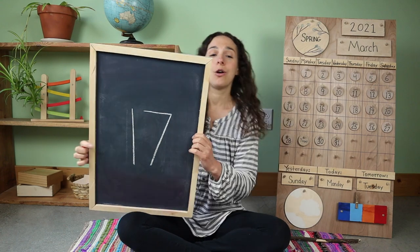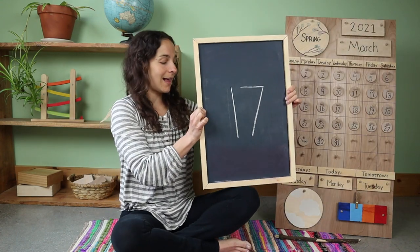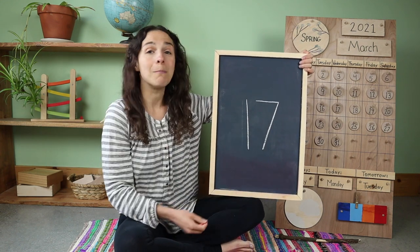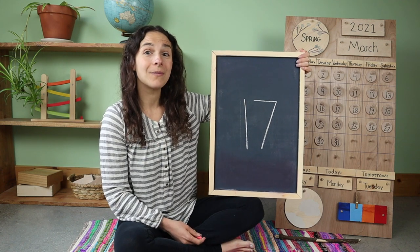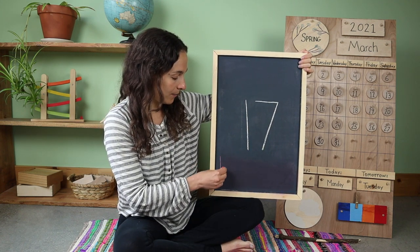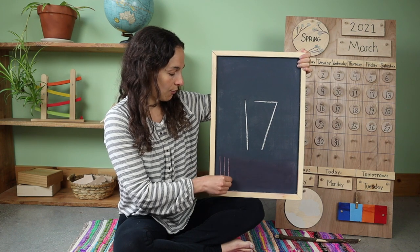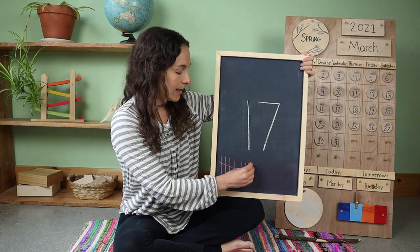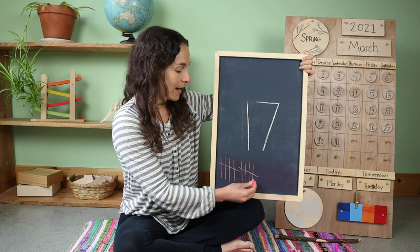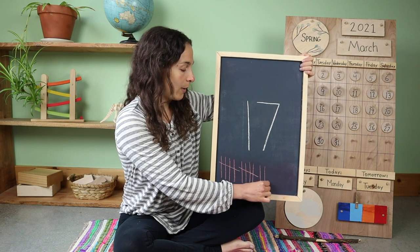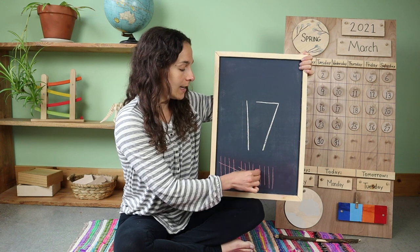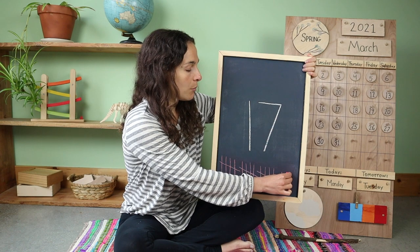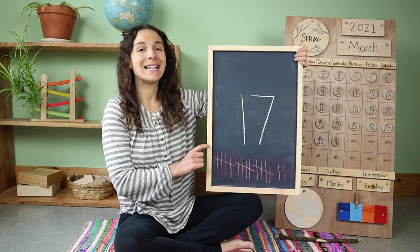Now we are going to count 17 tally marks together. Remember, tally marks are just lines that I'm going to draw on the bottom of the chalkboard and we can count them together. Here we go: 1, 2, 3, 4, 5 goes across, 6, 7, 8, 9, 10 goes across, 11, 12, 13, 14, 15 goes across, 16, and one more makes 17. 17 tally marks.